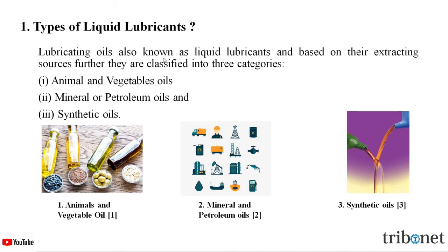Lubricating oils are also known as liquid lubricants. Based on their extracting sources, they are classified into three categories: first, animal and vegetable oils; second, mineral or petroleum oils; and the third is synthetic oils. Let us understand one by one — animal and vegetable oil lubricants, mineral or petroleum oil lubricants, and synthetic oil lubricants.